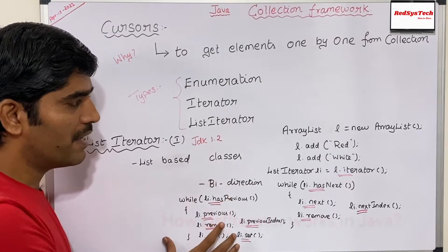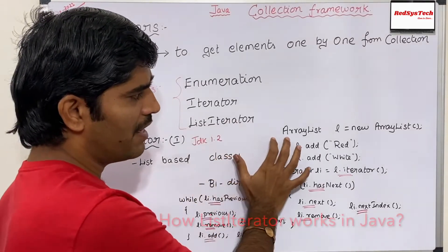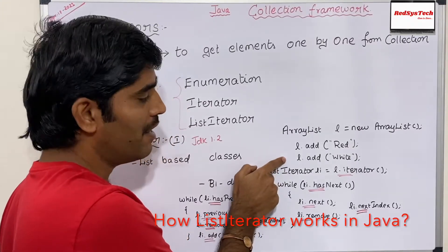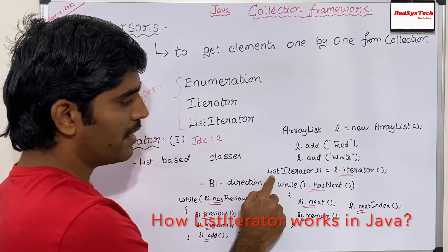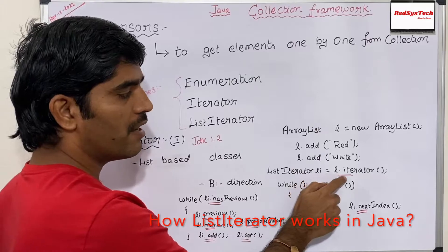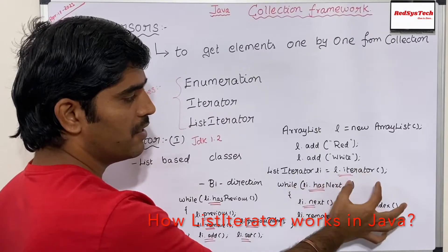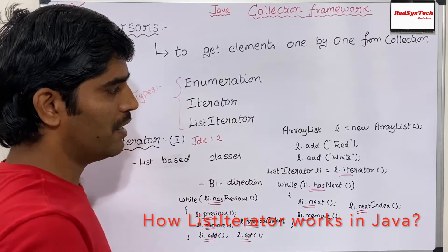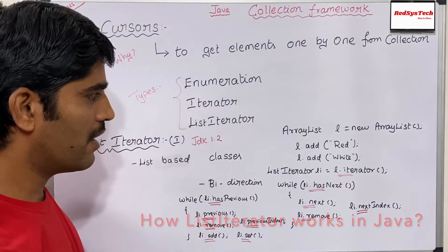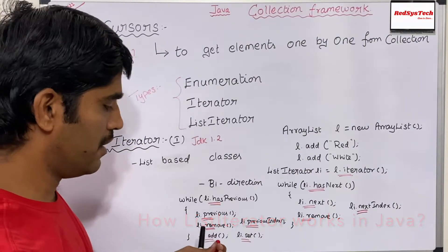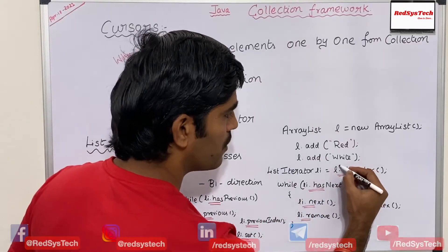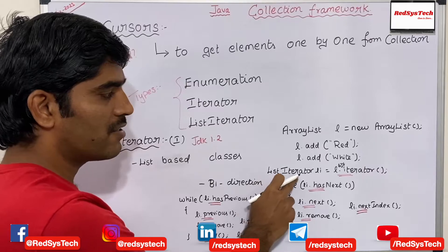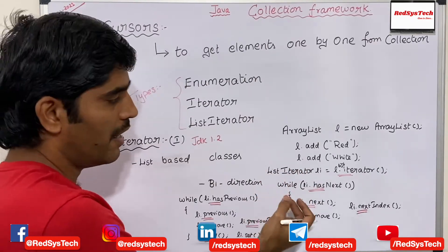How they implemented it is: let's say I have ArrayList L equal to new ArrayList. Inside the ArrayList I can add elements, and then I can declare ListIterator LL equal to L dot listIterator. With this I can get the ListIterator object. Note it is not L dot iterator — it is L dot listIterator.